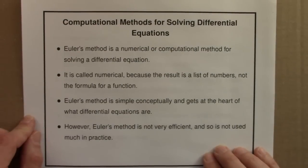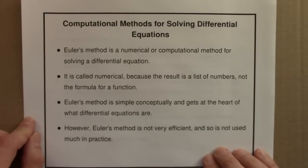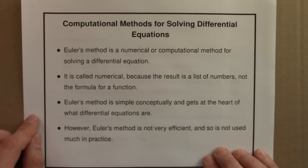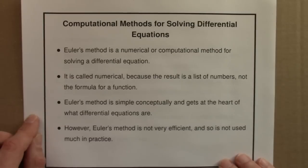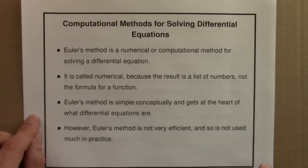I will conclude this subunit on computational methods for solving differential equations with some more general remarks. We've been discussing Euler's method. Euler's method is known as a numerical or computational method for solving a differential equation. It's computational because it involves doing computations using almost always a computer, and it's called numerical — its more traditional term — because the result of Euler's method is not a formula for a function, but a list of numbers. So we call it a numerical method.